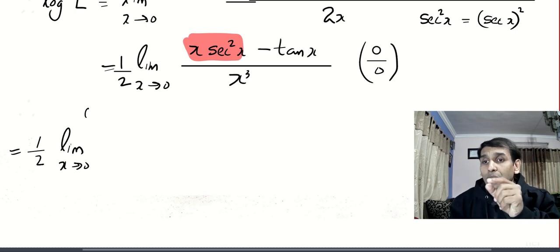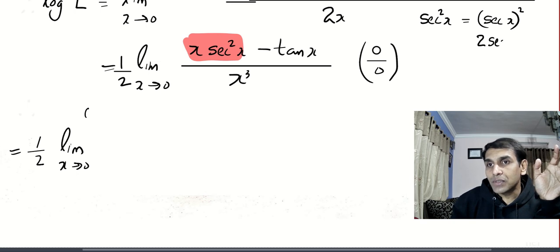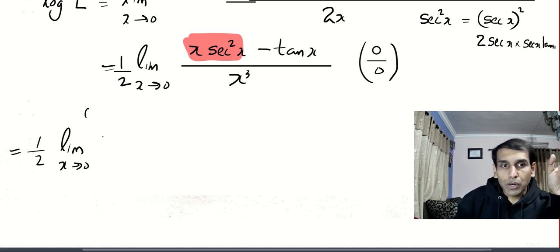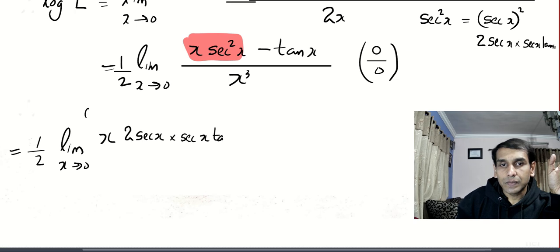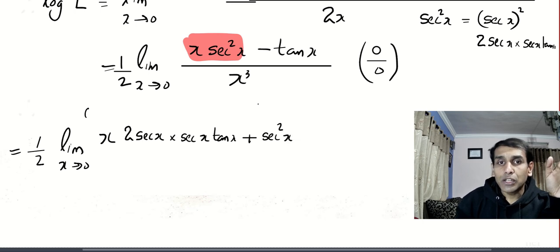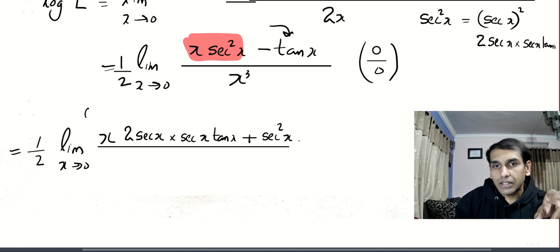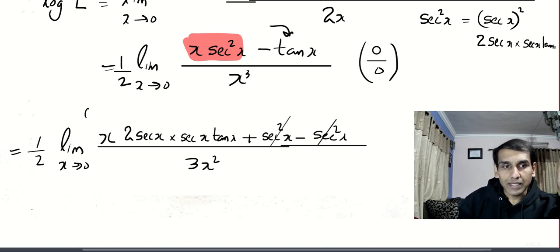sec²x can be written as (sec x) whole squared — it looks like something squared. The derivative of something squared is 2 times that thing times its derivative, so the derivative of sec²x is 2·sec x · sec x·tan x. Applying the product rule: first function times derivative of second, plus second function times derivative of first, which is 1. After differentiation, terms get cancelled, and we have 1/2 times 1/3 coming outside.